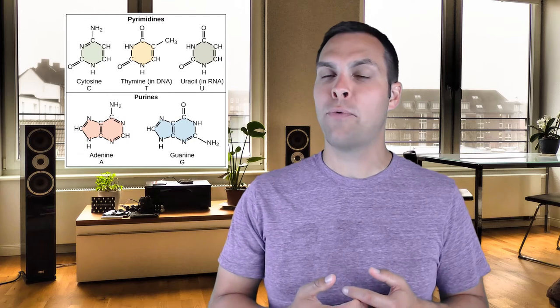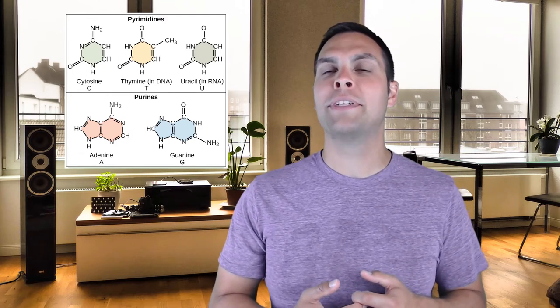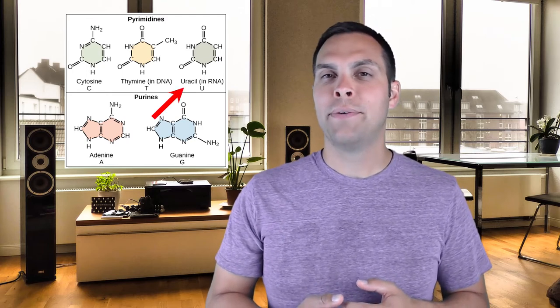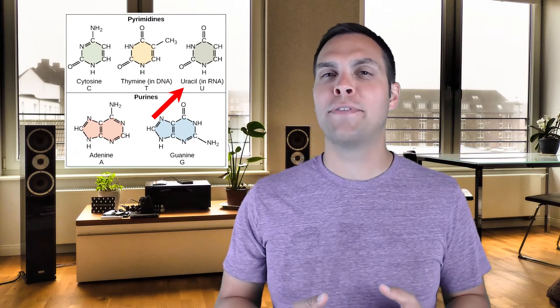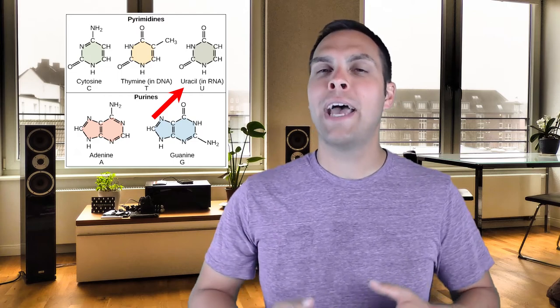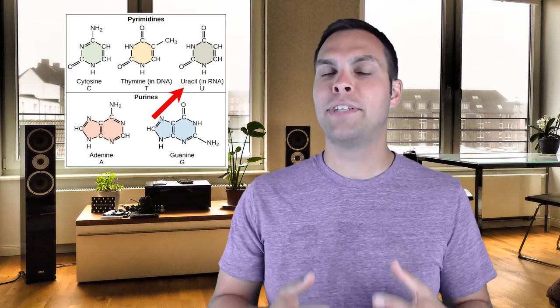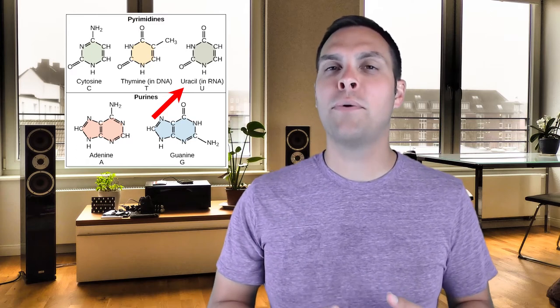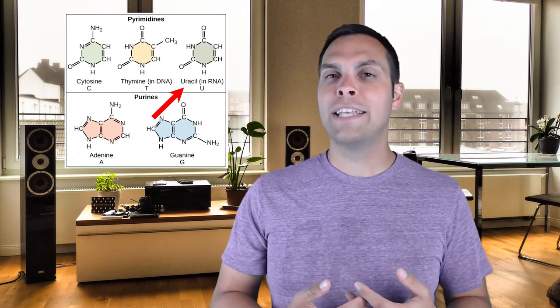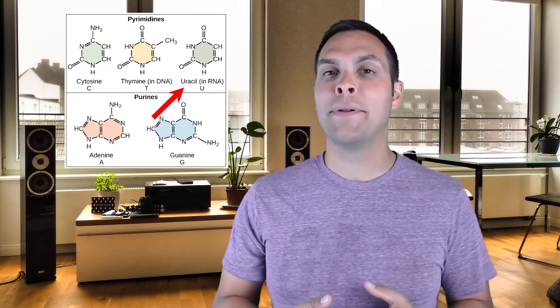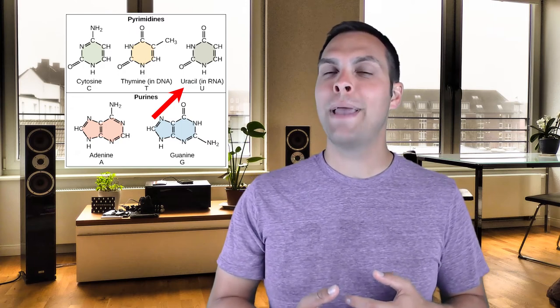RNA is going to have adenine, cytosine, and guanine, but instead of thymine, we're going to have uracil. There's only a very small difference between uracil and thymine, but it has a major impact. They are different nucleotides. Also, unlike DNA, while RNA is going to have that sugar phosphate backbone, there will be no base pairing.